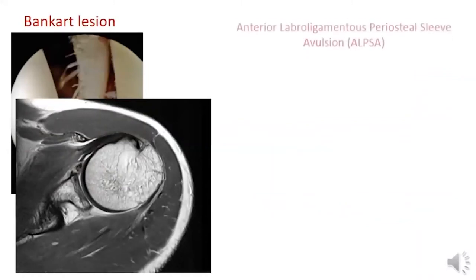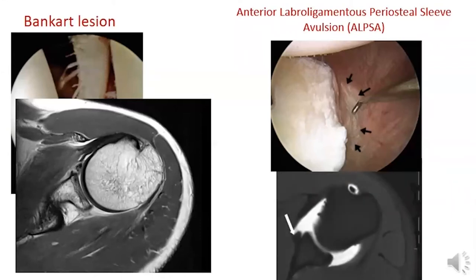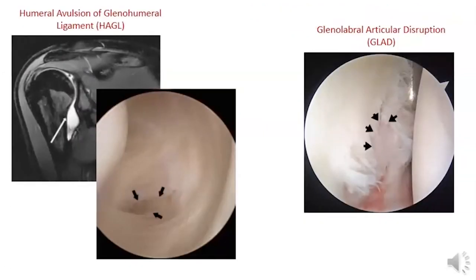The ALPSA lesion — anterior labral ligamentous periosteal sleeve avulsion — occurs in recurrent instability, with the labral-ligamentous complex healing on the medial aspect of the glenoid neck. The HAGL lesion is a humeral avulsion of the glenohumeral ligament requiring open repair. GLAD — glenolabral articular disruption — is a shearing injury to the articular glenoid cartilage.